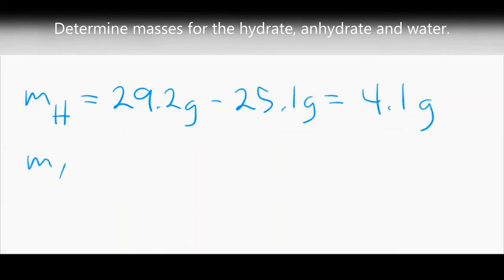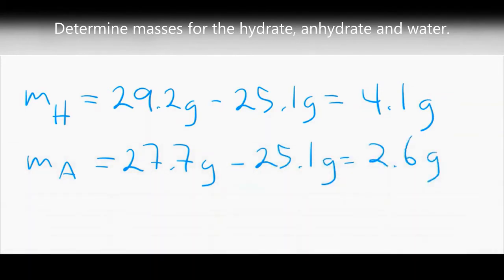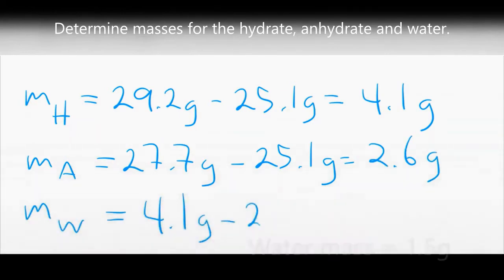The mass of the anhydrate was determined to be 2.6 grams by finding the difference between the ending sample mass in the dish, 27.7 grams, and the mass of the empty evaporating dish, 25.1 grams. This means that 1.5 grams of water was removed from the copper sulfate during the heating process, found by calculating the difference in masses of the hydrated and anhydrous forms.